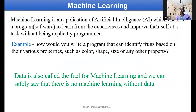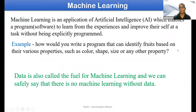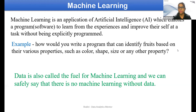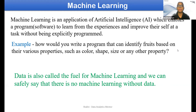Machine learning is an application of AI which enables a program or software to learn from experiences and improve its tasks without being explicitly programmed. It helps the program to learn from past experience — whatever history and data you have — and on that basis improve and perform the task. Nobody tells you what to do; just like human beings, whenever we make a mistake or learn something, we take the next step based on that experience.